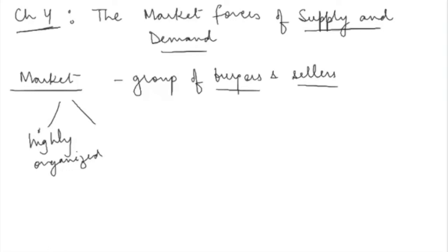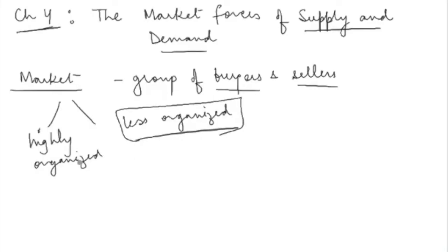In unorganized markets, suppliers do not know each other — they are widely spread out, and buyers are also widely spread out. In such situations, it is possible for a supplier to sell the same commodity at a different price. In reality, you will definitely come across these less organized market forms where the same commodity of the same quality might be sold at different prices to different consumers at different locations.